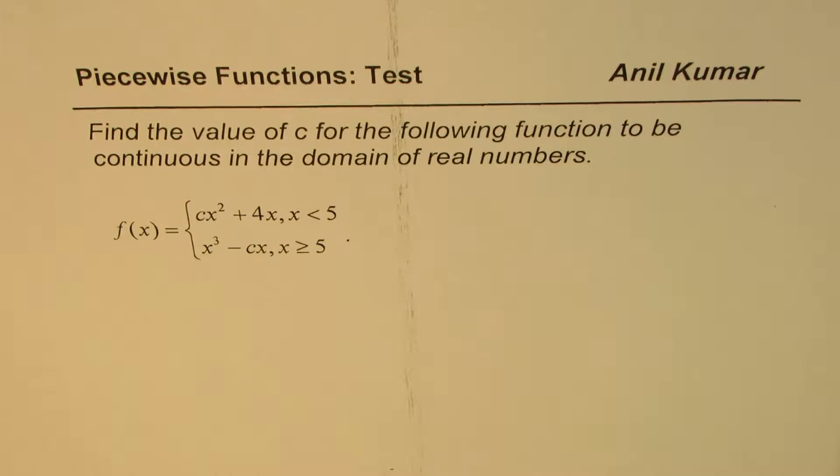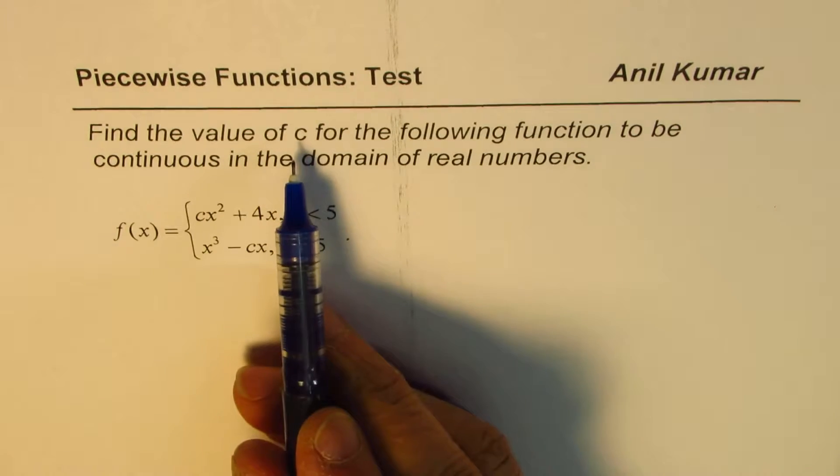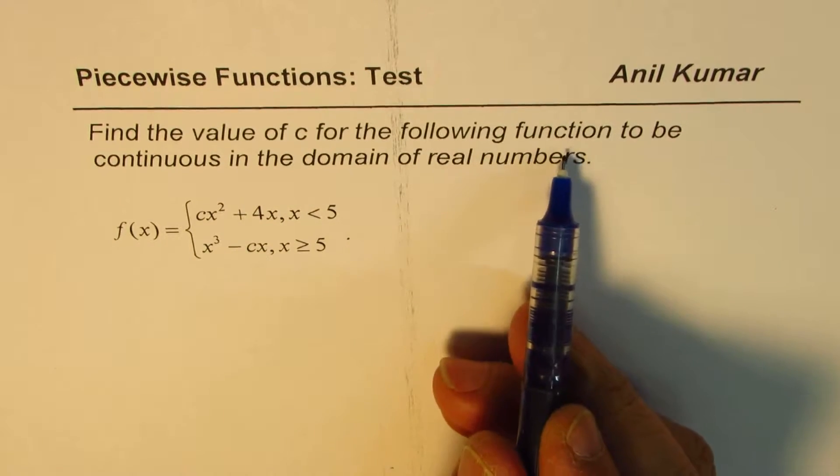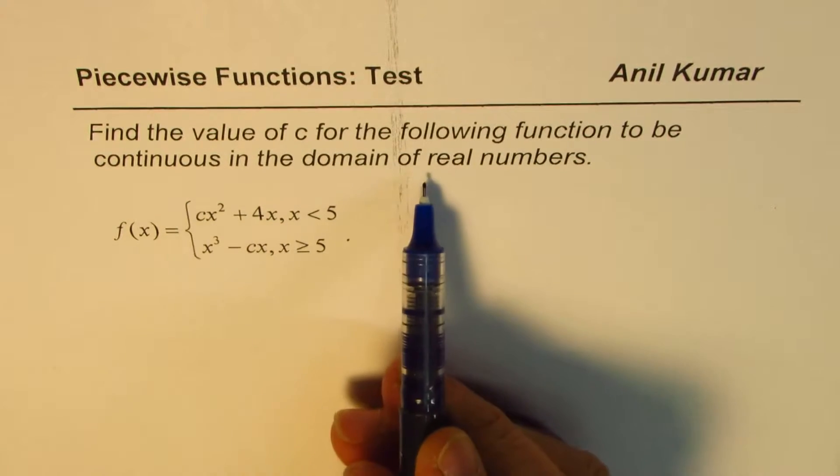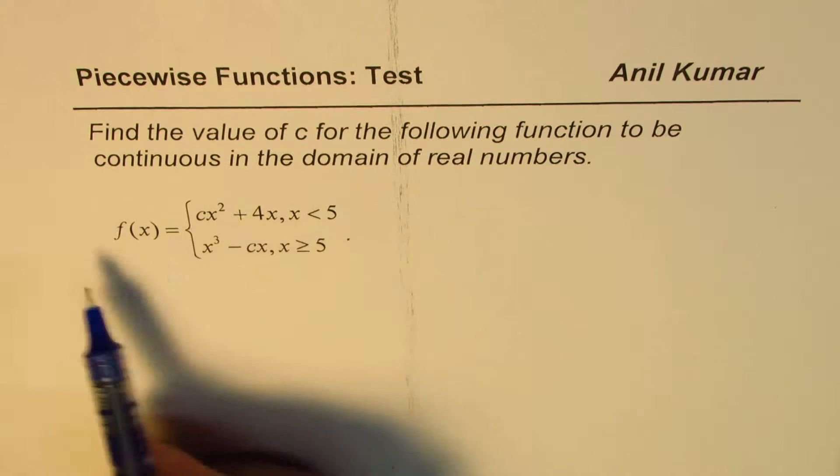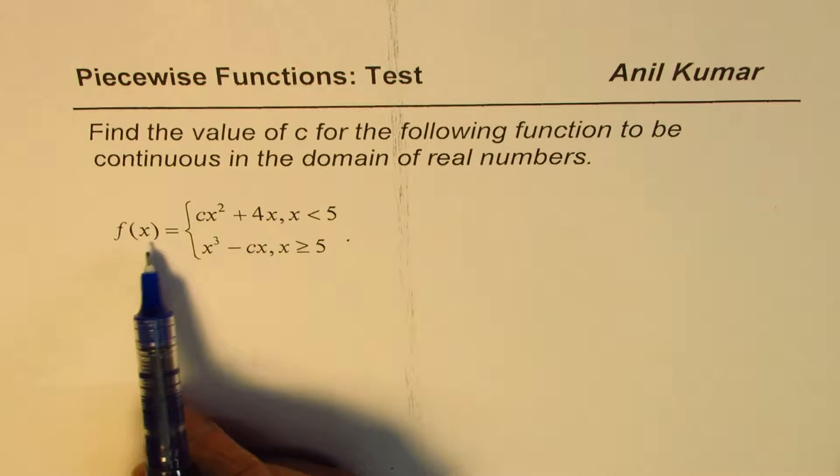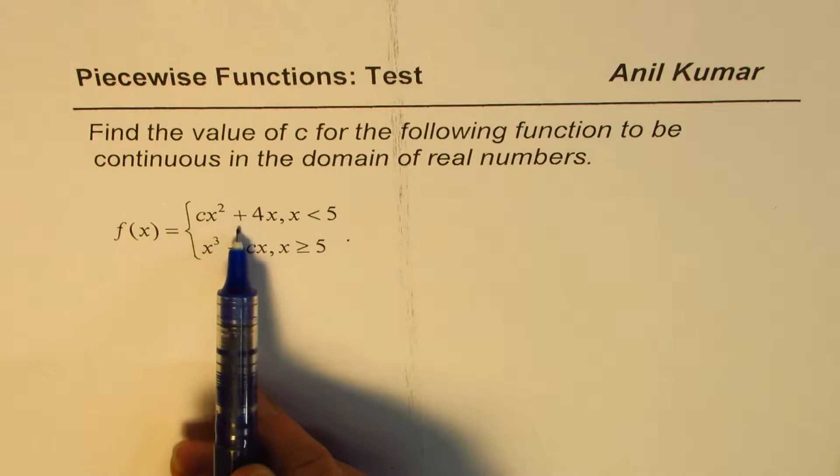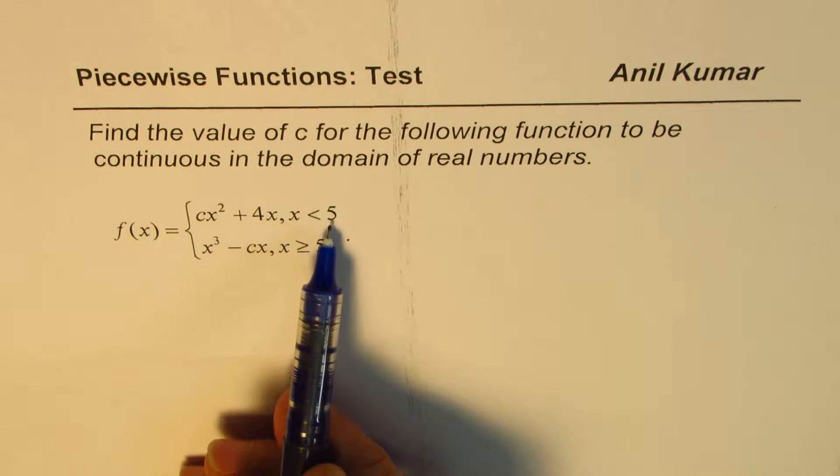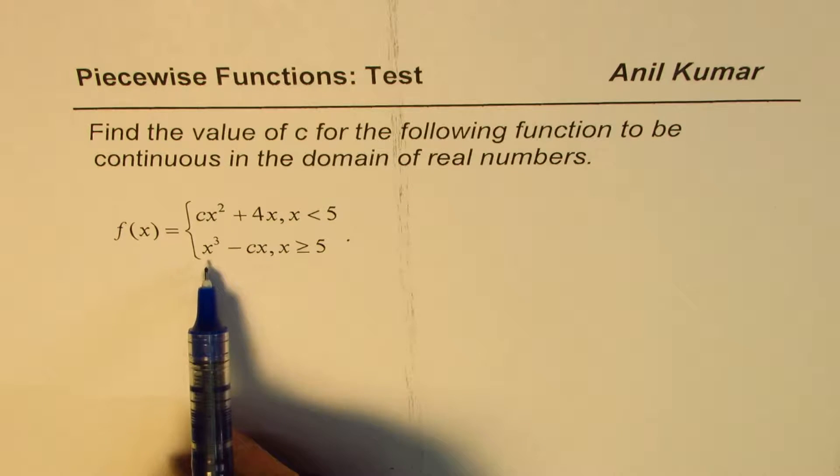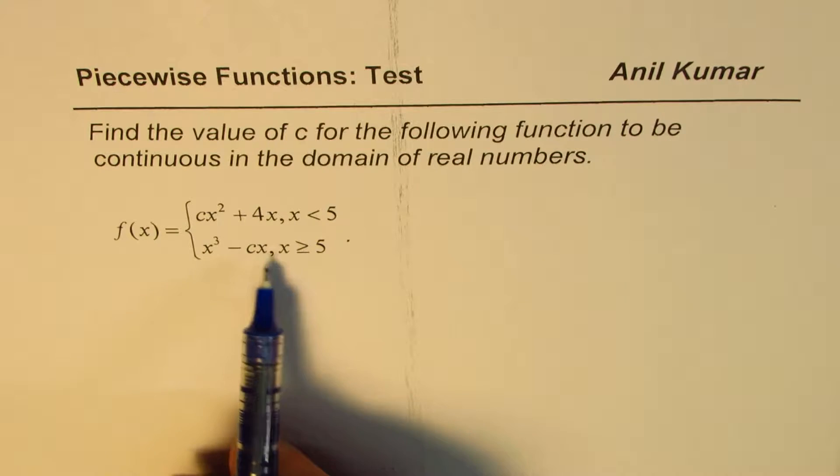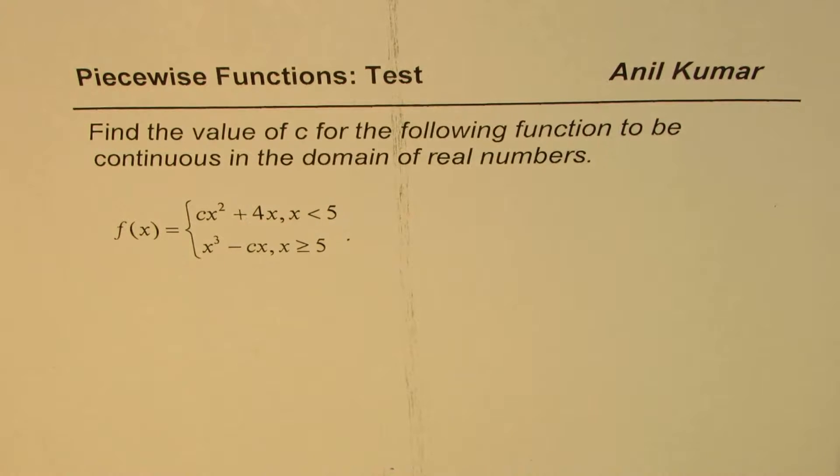I'm Anil Kumar sharing with you a question on piecewise functions. I picked this question from a test paper. The question here is: find the value of c for the following function to be continuous in the domain of real numbers. The function is f of x equals cx squared plus 4x when x is less than 5, and equals x cubed minus cx when x is greater than or equal to 5.